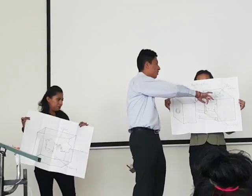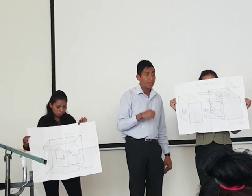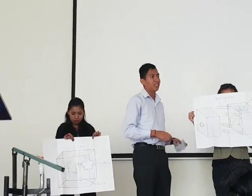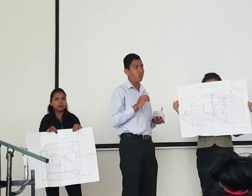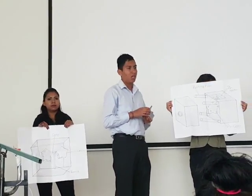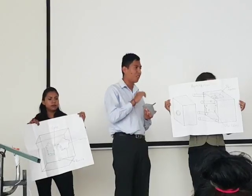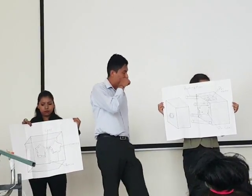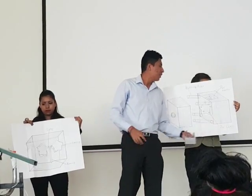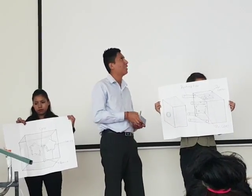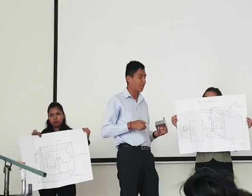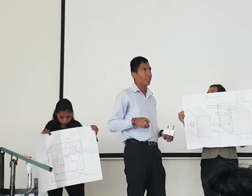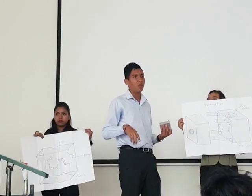Pin ejector — it consists of pins that push the product out of the mold. Pin core — the pin core serves to make the internal holes of the piece.